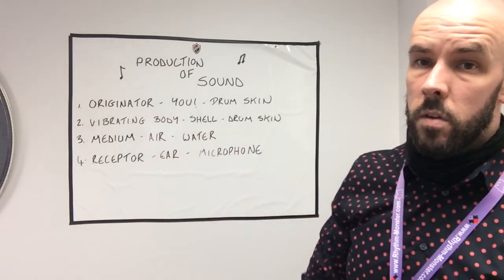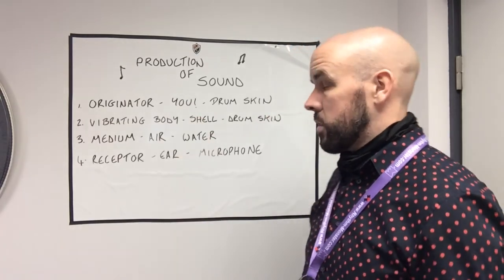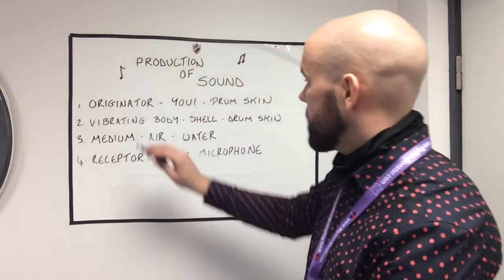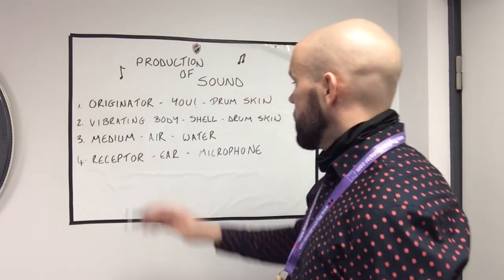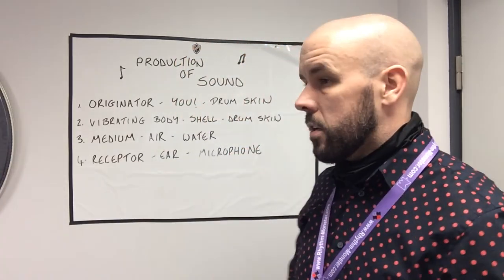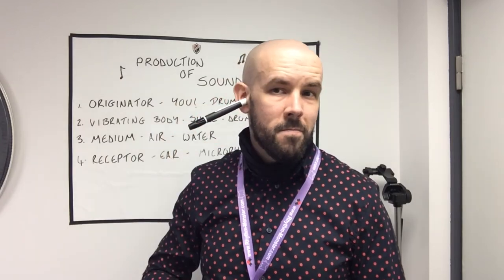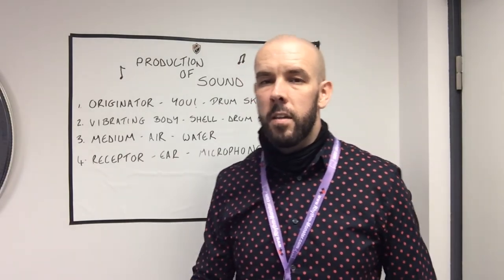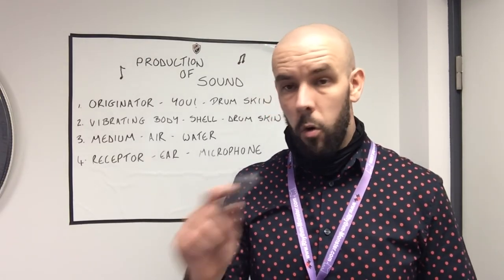You will be asked about these four elements on your tests. The originator is the original source or energy of the sound. The vibrating body for drummers is the drum skin and drum shell; for pipers, it's the pipe reed. The medium is the air, where the sound travels after leaving the drum or your mouth. The receptor is the audience's ear — where sound is received as vibrations and your brain converts them into recognizable sounds. I'll put some slides up which you can copy out.